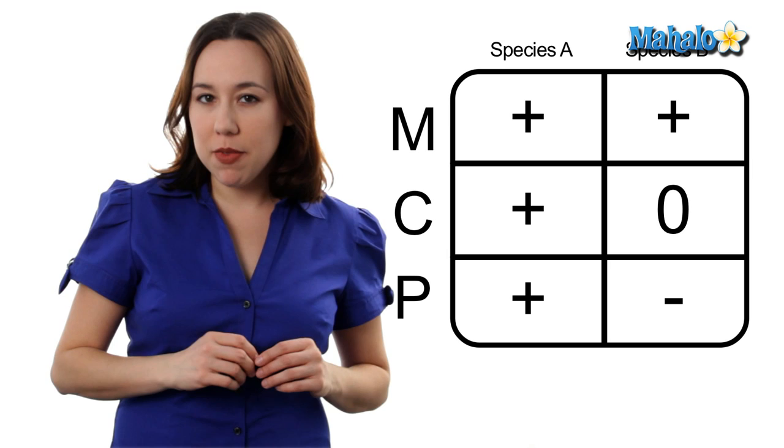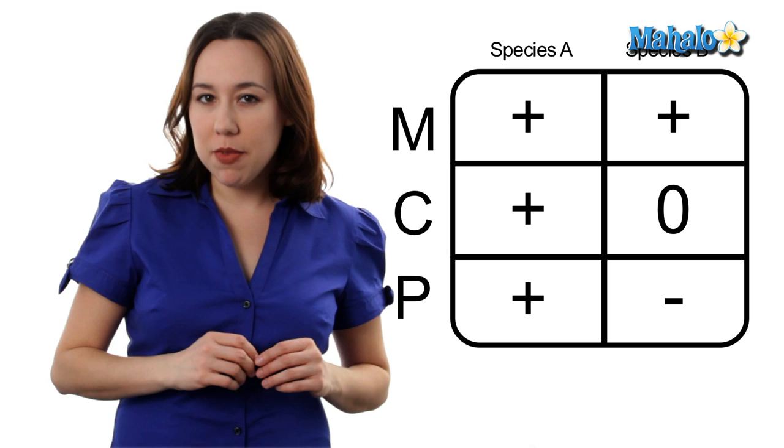Now, parasitism. We're going to write a plus for species A and a minus for species B. Because in this type of interaction, one species benefits while the other species is harmed.